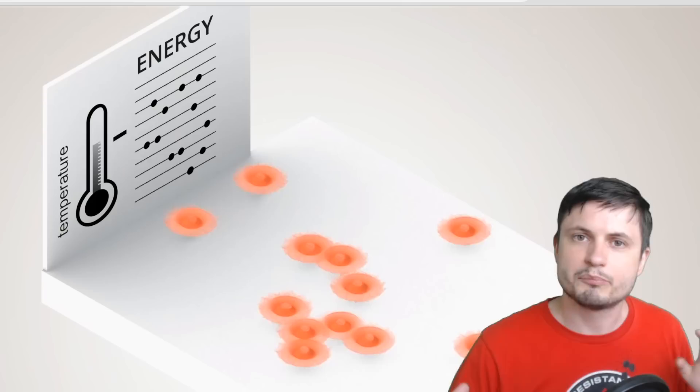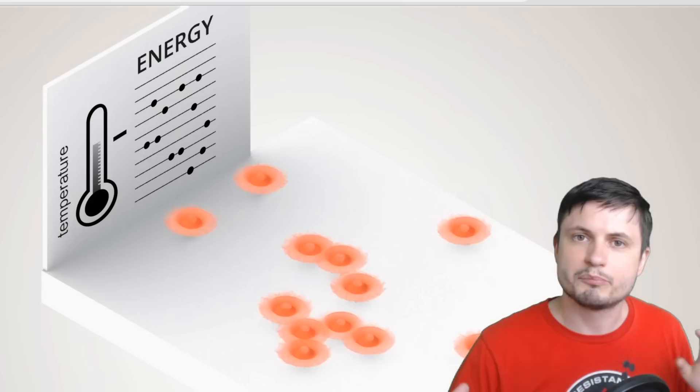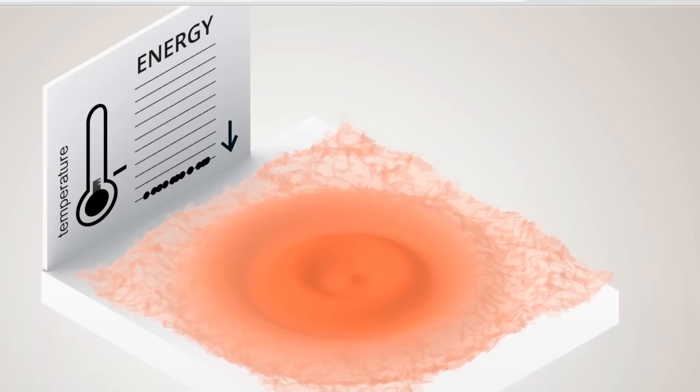And this is when all of the particles sort of stop moving and start acting like this huge, large particle altogether. They essentially start forming these extremely large and massive quantum states. They all start acting like one single particle. And since we've been able to create these in the lab, we know that this is real and so is the quark matter probably.